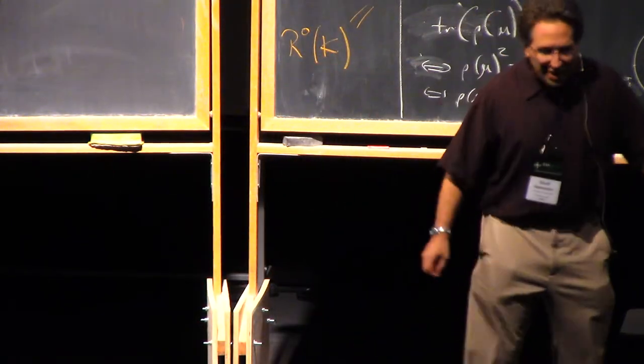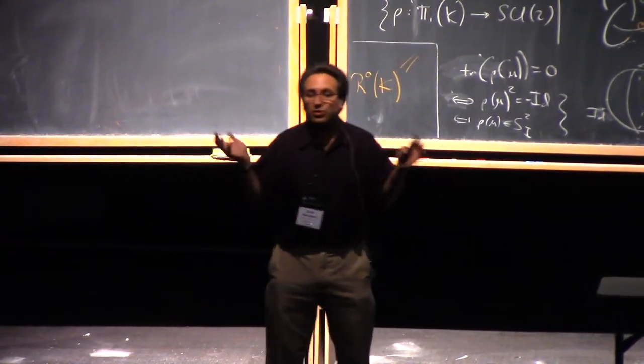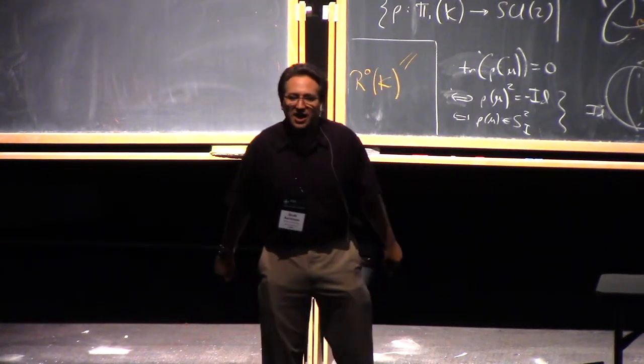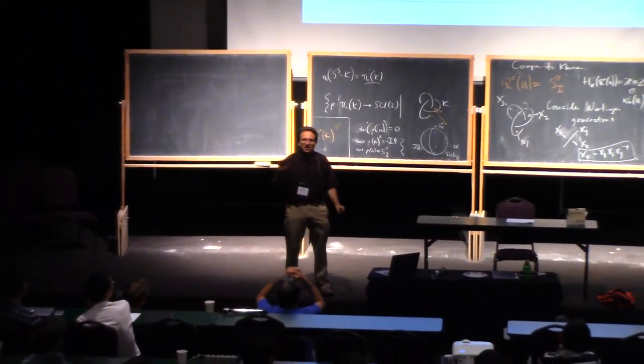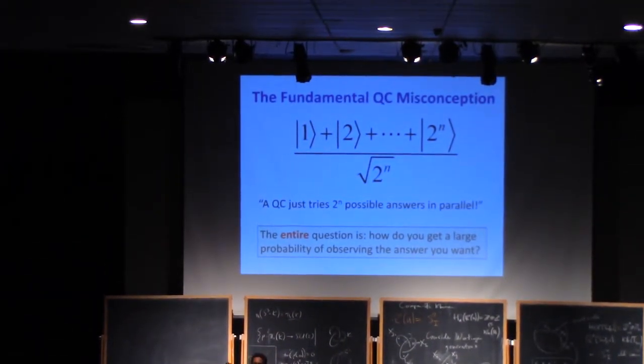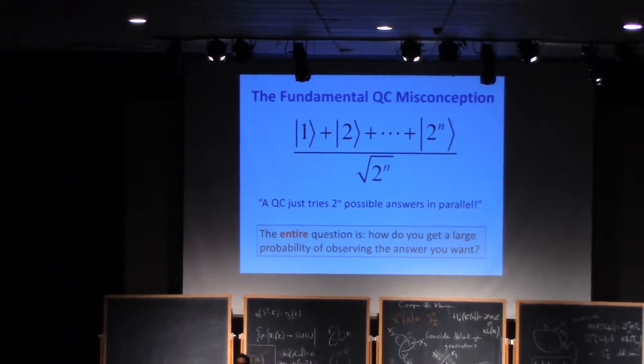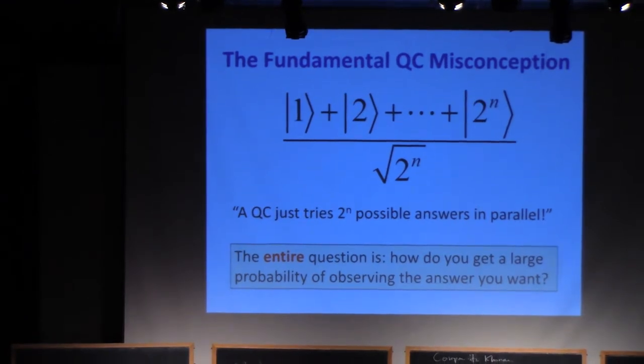So Peter Shor, a quarter century ago, found an amazing way to do that for the particular problem of factoring integers, and a few other problems in group theory and number theory, typically about abelian groups - finite or sometimes infinite abelian groups. His methods do not seem to generalize to NP-complete problems. Whether NP is in BQP, whether quantum computers can efficiently solve the NP-complete problems remains an open problem to this day.